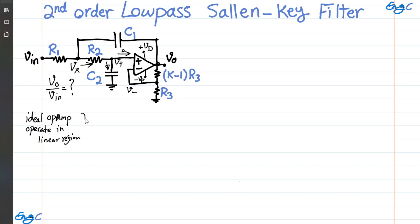With that in mind, because the op-amp is ideal, operating in the linear region, not saturated, and as you can see there is a negative feedback loop, therefore the virtual short is the correct assumption. So V-positive, the voltage at the positive input terminal of the op-amp, should be equal to the voltage at the negative input terminal. Let's keep that as equation number one.